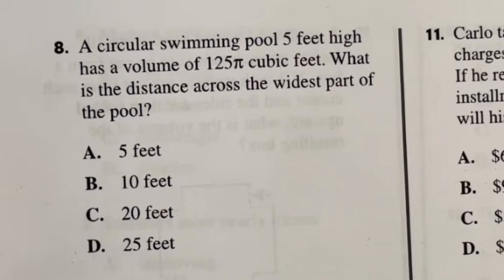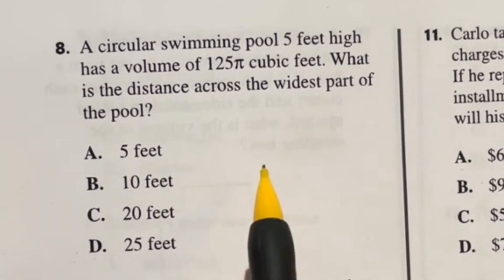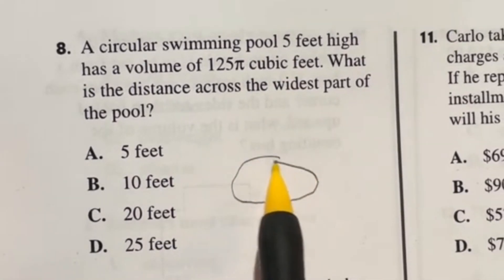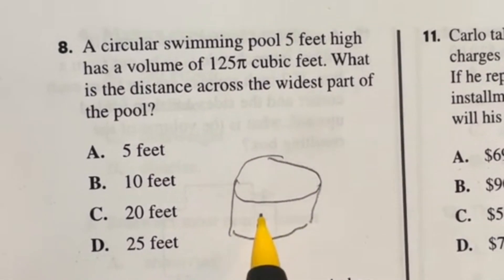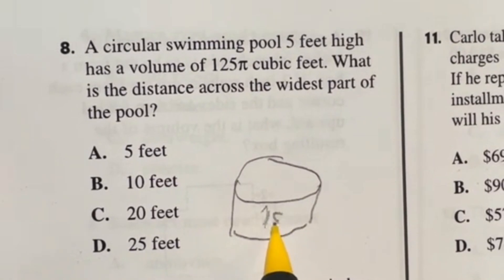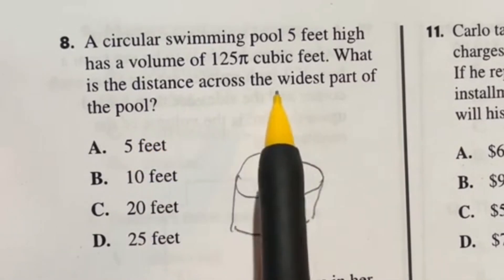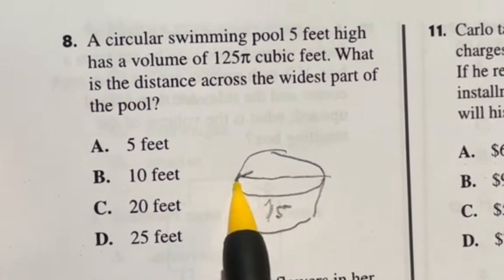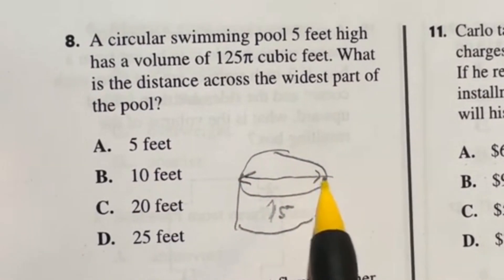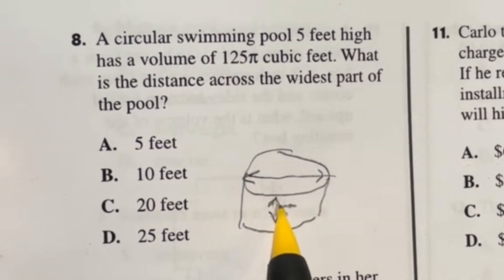So for number eight, it says that a circular swimming pool five feet high has a volume of 125π cubic feet. So we're looking at like a cylinder here where it is from top to bottom five feet high. It says what is the distance across the widest part of the pool? So from one side of this circle to the other, what's the distance? So there's a few basic things you need to know here that makes this really easy.